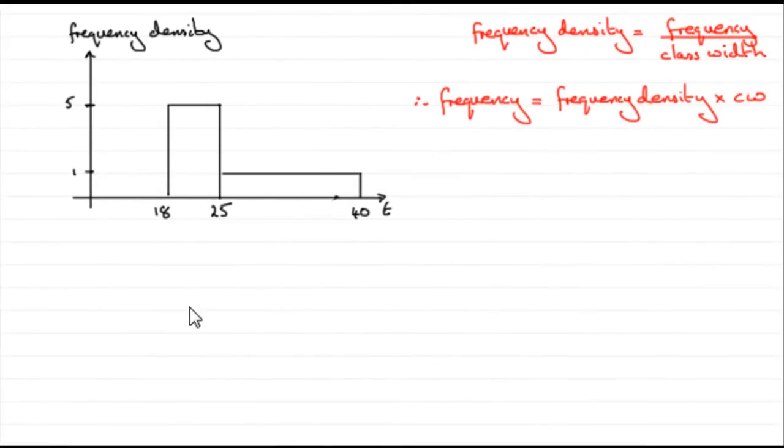Hi. Now for the first part, where we've got to work out the frequencies between 18 and 25 and 25 to 40, what it boils down to is that you've just got to work out the area of each of these blocks.